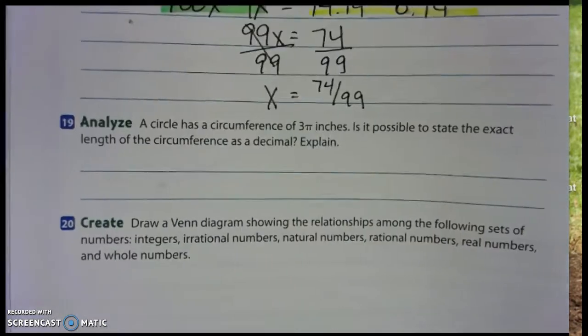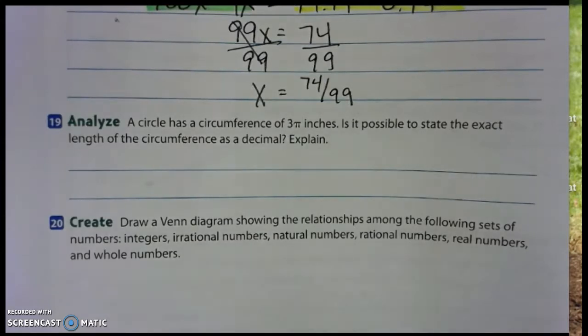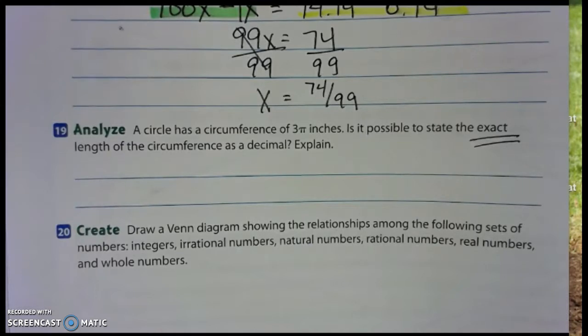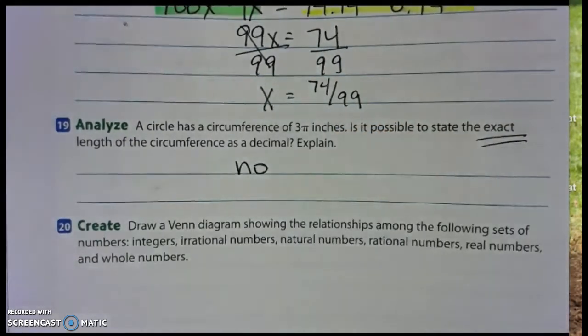Number 19 is a thinking question. A circle has a circumference of 3 pi inches. Is it possible to state the exact length of the circumference as a decimal? When they say exact, they mean without rounding. Pi is an irrational number that has an unlimited amount of decimals. Can we write the circumference to an exact amount as a decimal? No. You cannot. Irrational numbers cannot be written exactly as a decimal because those numbers go on forever. You would never write all of those numbers down. So the answer is no. And that is your explanation.